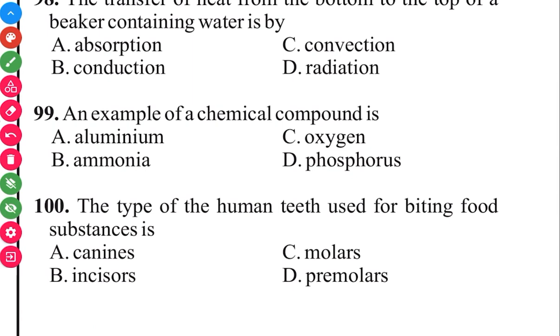Question 100. The type of human tooth used for biting food into substances is incisors. The answer in 3, 2, 1 is incisors, B.